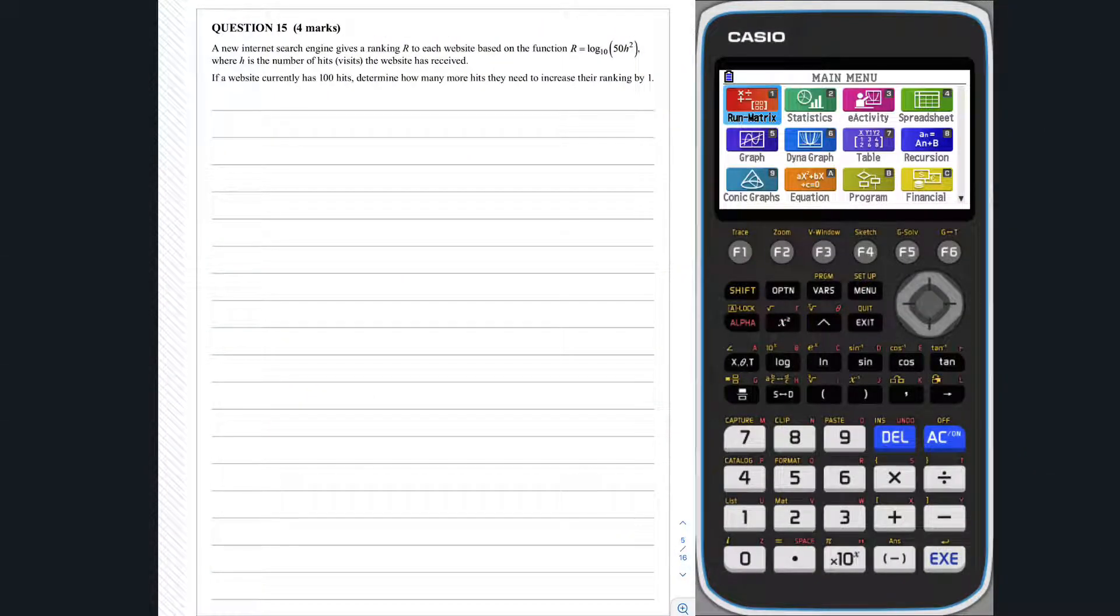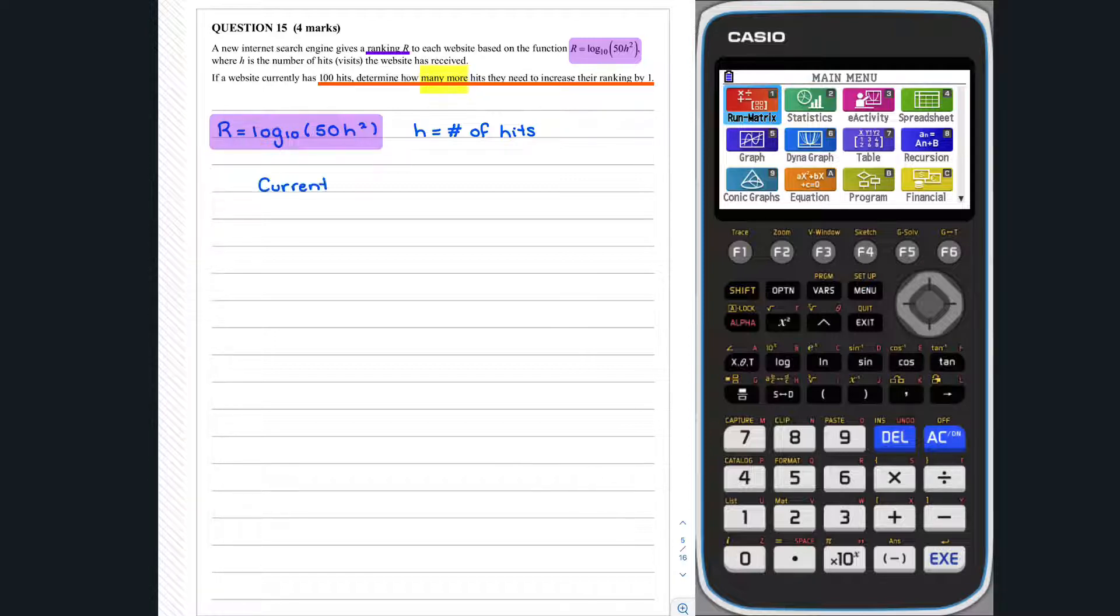Question 15. An internet search engine determines the ranking R that a website receives based on the function R is equal to log base 10 of 50 times H squared, where H is the number of hits the website has received. A website currently has 100 hits, and we need to determine how many more hits are required to increase their ranking by one. First, let's determine the website's current ranking.